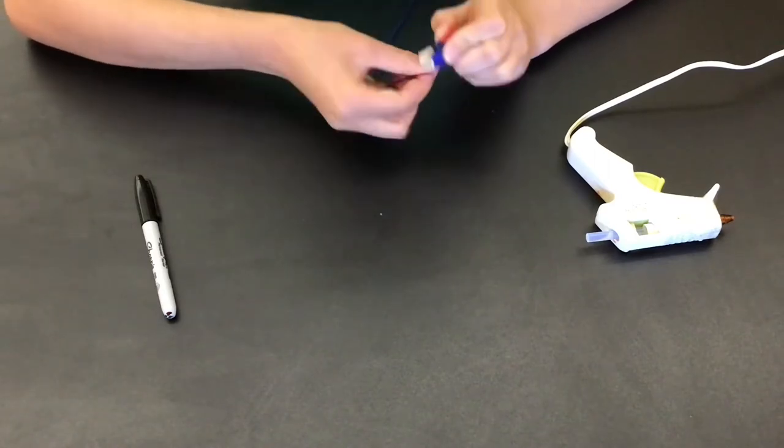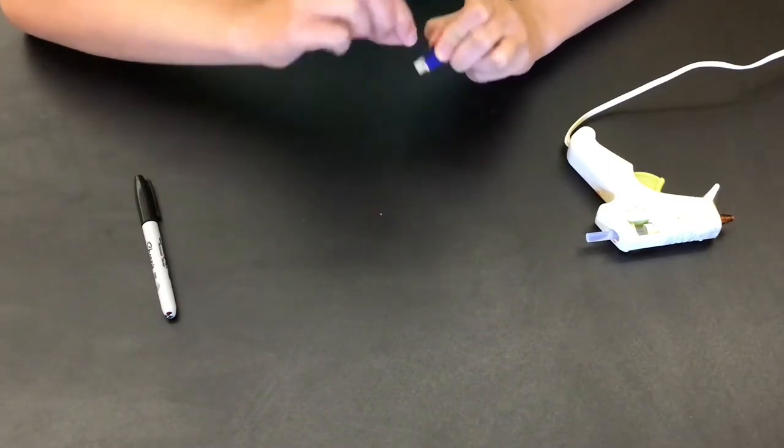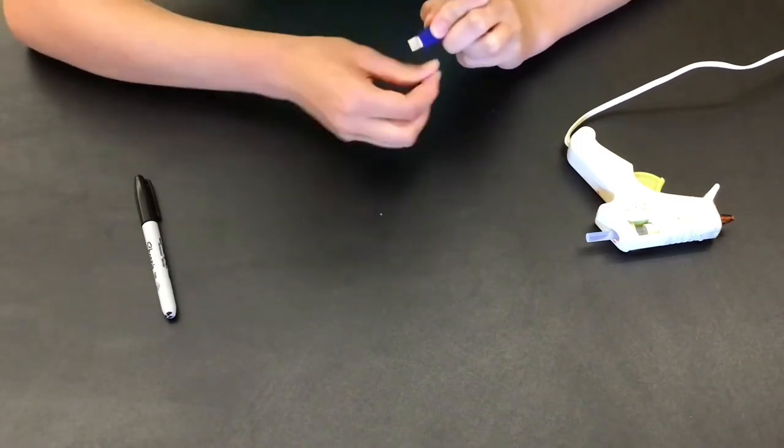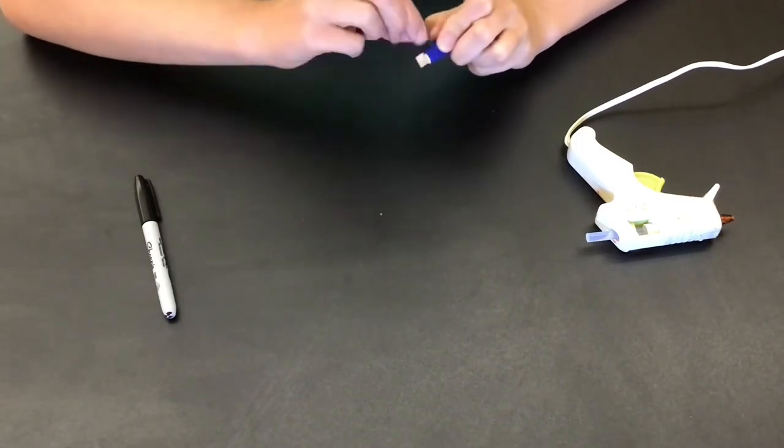So you're just going to keep wrapping your string around either each individual piece of wood or the whole thing to get the bottom of your worry doll.